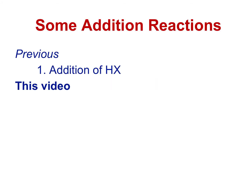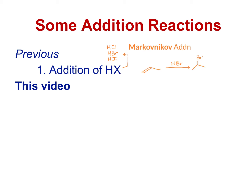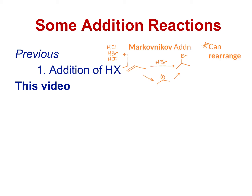As a reminder, previously we talked about the addition of HX to a double bond. There are a couple things we need to remember. The first is that it's a Markovnikov addition, which means that the X, which is a halogen, is going to be on the more substituted carbon of the double bond. The other thing we know is that it makes a carbocation as part of the mechanism. Because it has a carbocation, rearrangement can occur. So those are all things we want to remember going forward for similar reactions.